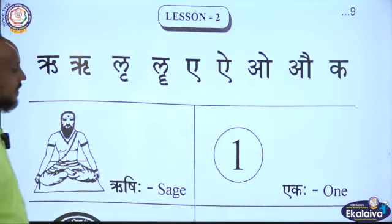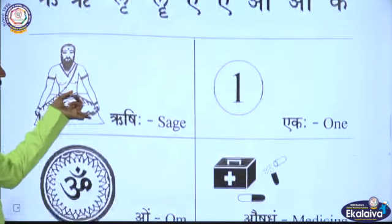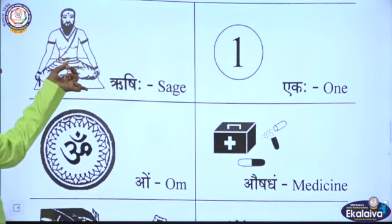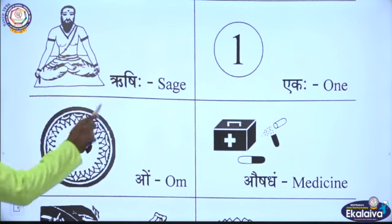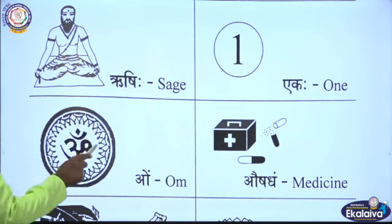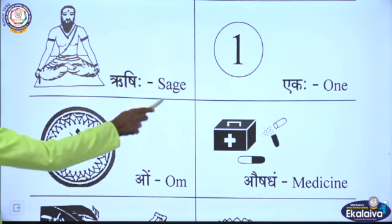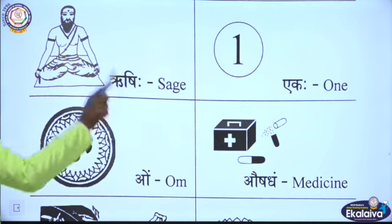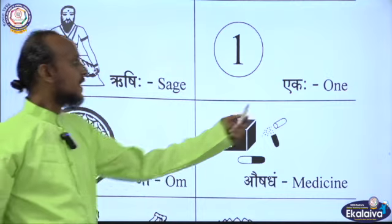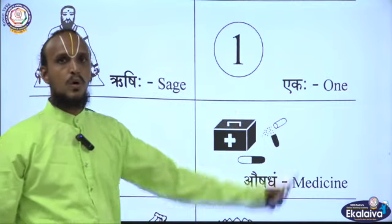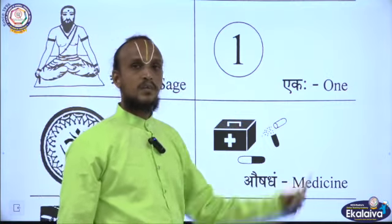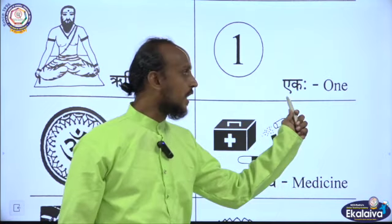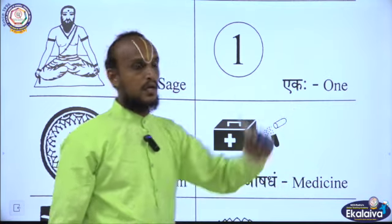Okay children, I will read the example words. Listen here. Ṛṣihi, Ṛṣihi — sage. Yekaha — wan. Yekaha — wan.